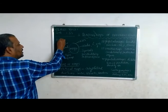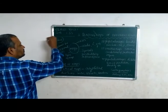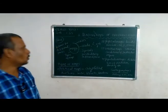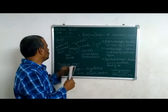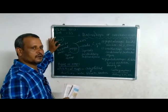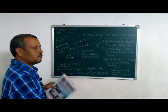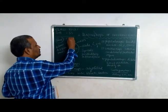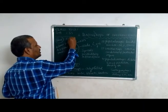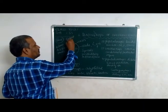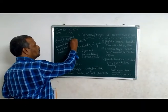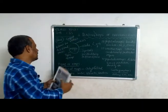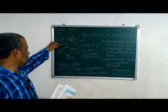Blue color indicates oceans. For example, cropped areas — the color referring to that is yellow. Like that, colors are used for different places on a map.